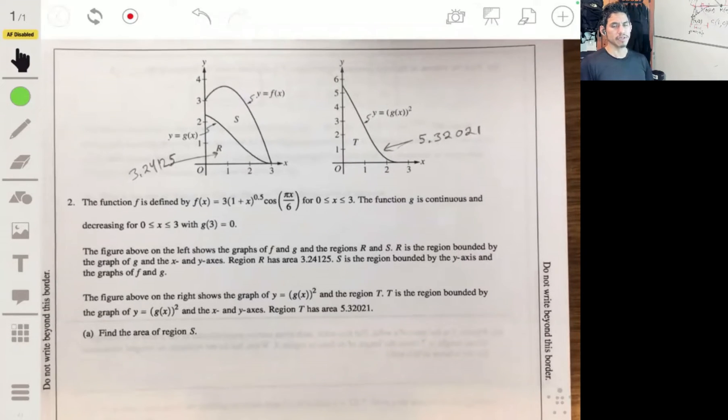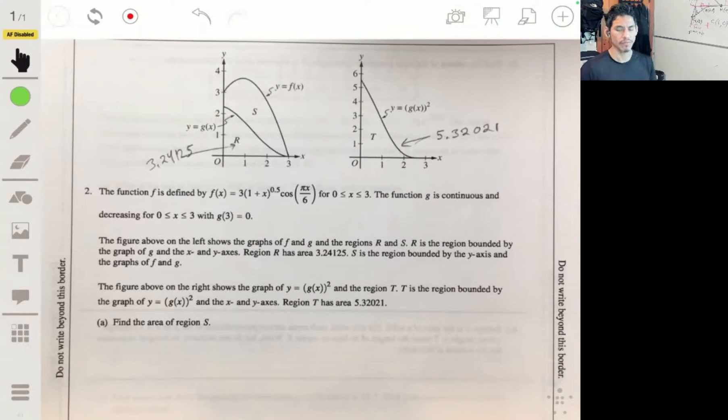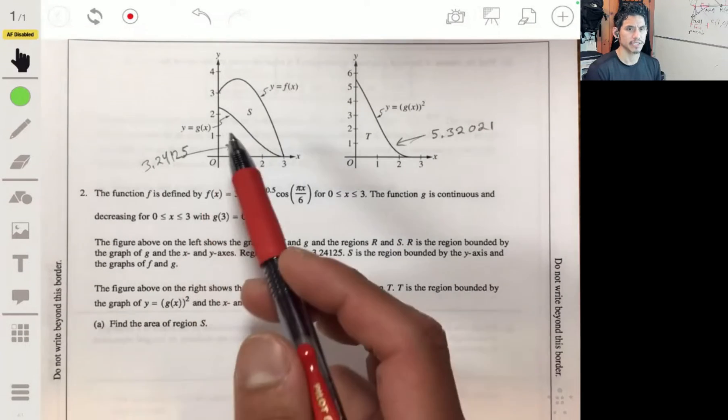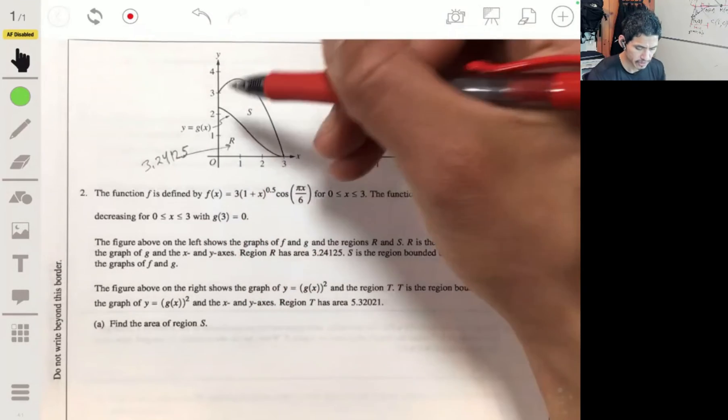So right away you can tell this is going to deal a lot with volumes of revolution, so hopefully you got that down, and area between curves. So first, you find the area of region S. We got to find this area.